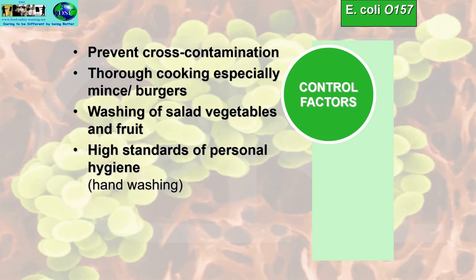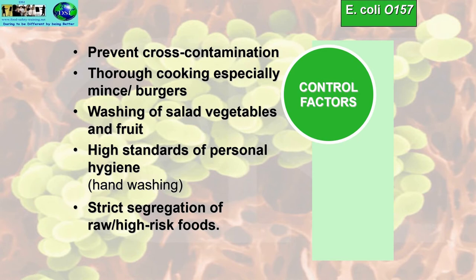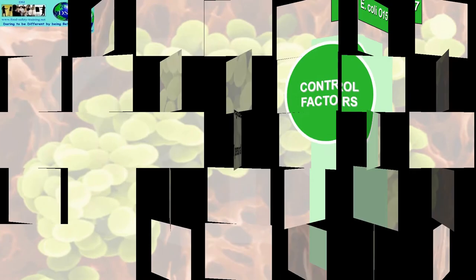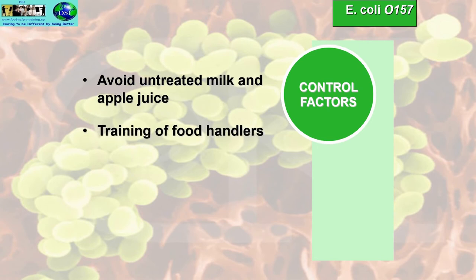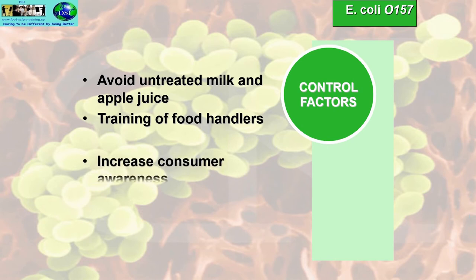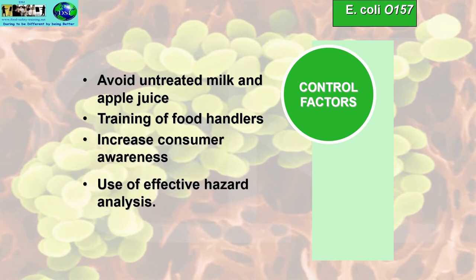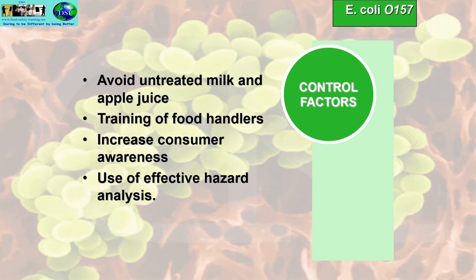High standards of personal hygiene including very rigorous hand washing regimes, and strict segregation of raw and high-risk foods are essential. Other control factors include avoiding untreated milk and apple juice, training of food handlers, increased consumer awareness, and use of effective hazard analysis — HACCP (Hazard Analysis Critical Control Points) — which is a food safety management system covered in a later lecture.